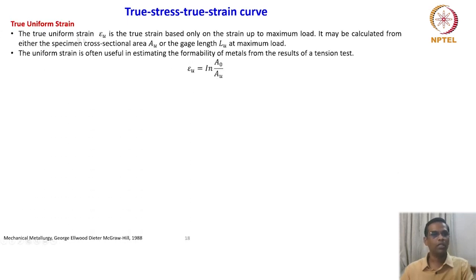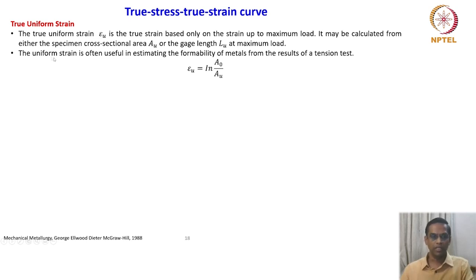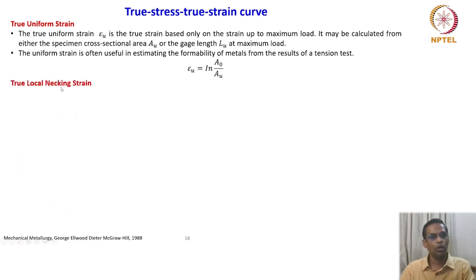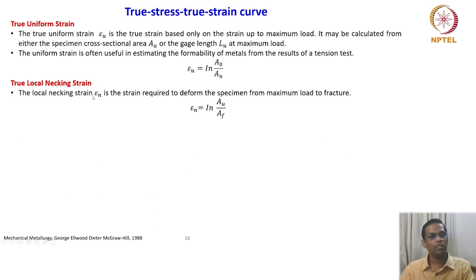True uniform strain is a very important parameter. The true uniform strain epsilon_U is the true strain based on strain up to maximum load. It may be calculated from the specimen cross-sectional area A_U or the gauge length at maximum load: epsilon_U = ln(A_0/A_U). The uniform strain is often useful in estimating the formability of metals from tensile test results. The true local necking strain epsilon_n is the strain required to deform the specimen from maximum load to fracture: epsilon_n = ln(A_U/A_f).